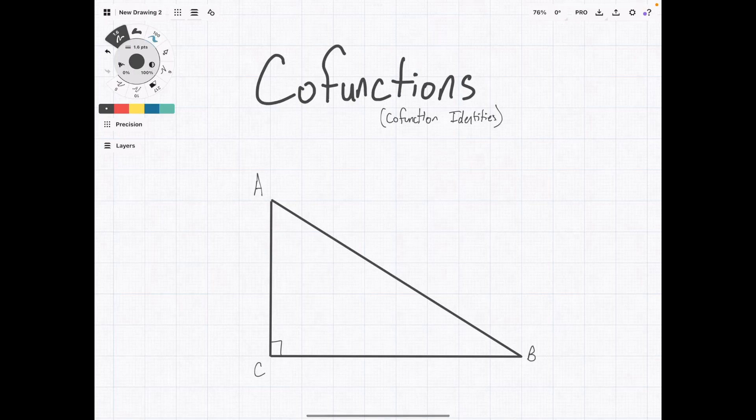In this video, I'm going to talk about co-functions in trigonometry. They're also known as the co-function identities, and what they do is they show a relationship between complementary angles and the trigonometric functions. So let me show you that visually first, and then we'll dive into what the actual formulas are.